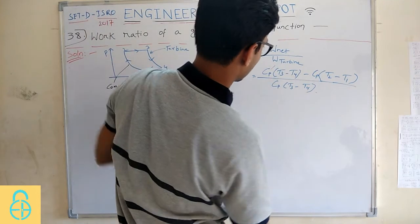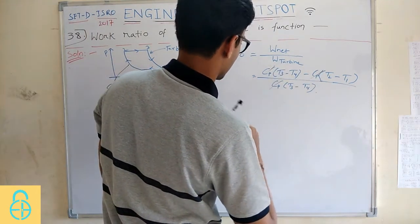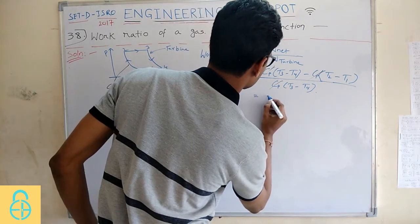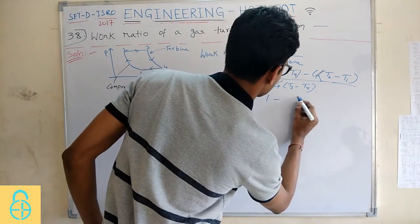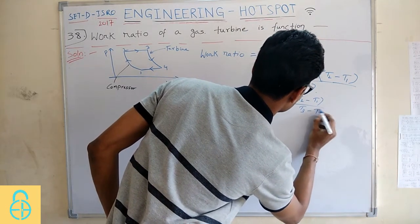You can cancel these terms, Cp and Cp. And if you split the term, you will get 1 minus T2 minus T1 upon T3 minus T4.